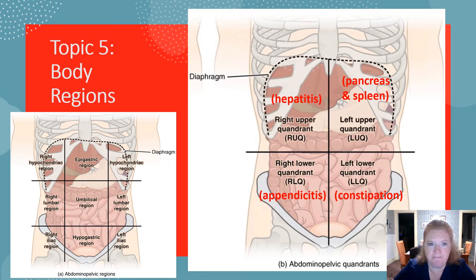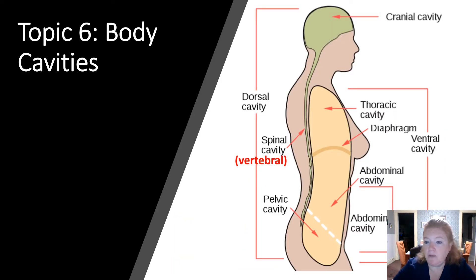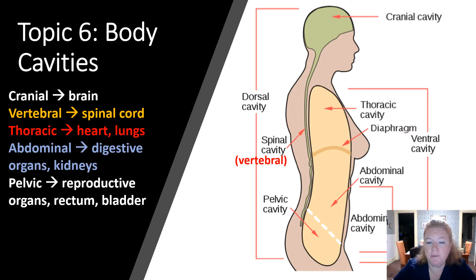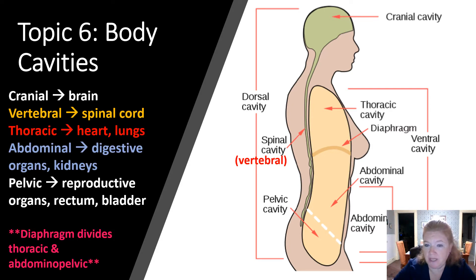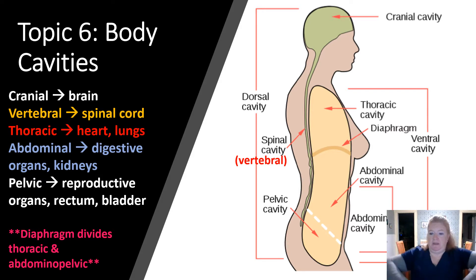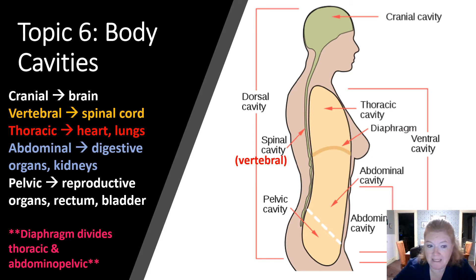Then we did body cavities. You should remember the parts in each cavity and the names of the cavities. Remember, spinal is also called vertebral. And remember that the diaphragm is the divider between the thoracic and abdominopelvic cavities.